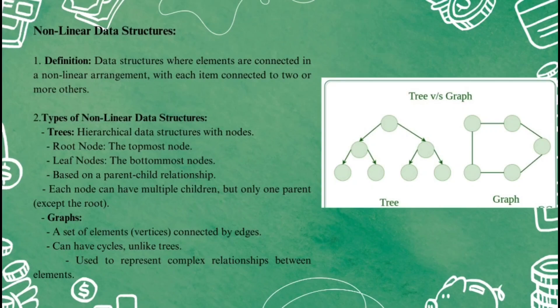Graphs: while trees are hierarchical, graphs are more flexible and can represent any kind of relationship. A graph is made up of vertices and edges which connect those vertices. Vertices are the elements or nodes in the graph. Edges are the connections between those nodes. Unlike trees, graphs can have cycles — which means you can start from one node, travel through the graph, and return to the starting node.